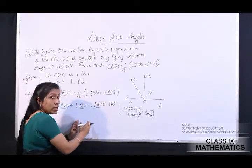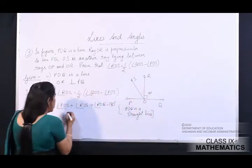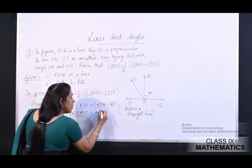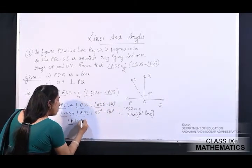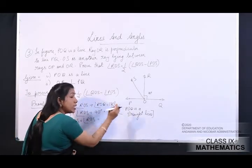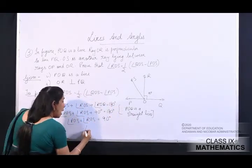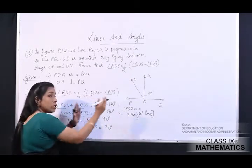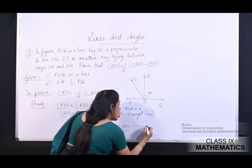Substituting ROQ as 90 degree: POS plus ROS plus 90 equals 180, so angle ROS equals 90 minus angle POS. This is equation number one.